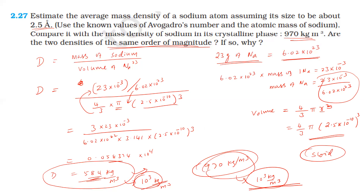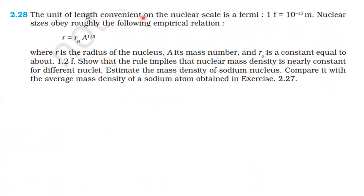The unit of length convenient on the nuclear scale is the fermi: 1 fermi equals 10 power minus 15 meters. Nuclear sizes obey the empirical relation R equals R0 times A power (1/3), where R is the nuclear radius, A is the mass number, and R0 is a constant equal to 1.2 fermi. This implies nuclear mass density is nearly constant for different nuclei. Estimate the mass density of the sodium nucleus and compare with the average mass density of the sodium atom.